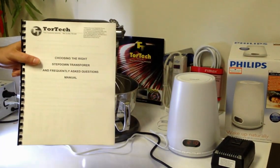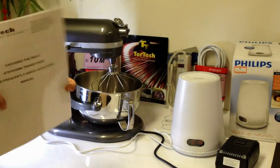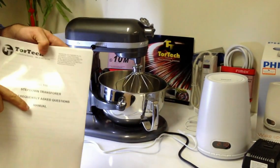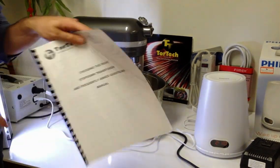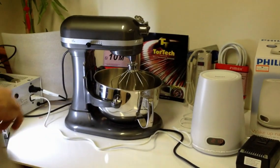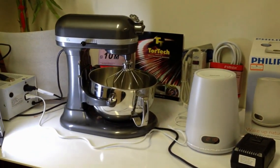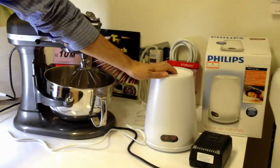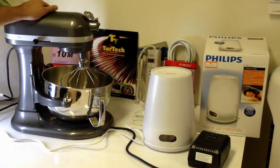Today we are going to show you how to choose the right step down transformer for your American equipment. We got a lot of questions about how to choose the right transformer so this is just a brief overview. Today we will be showing you two different types of American equipment: the Philips wake up light and the KitchenAid mixer.